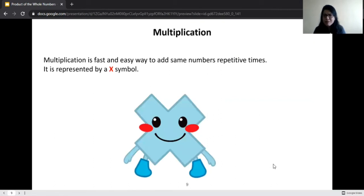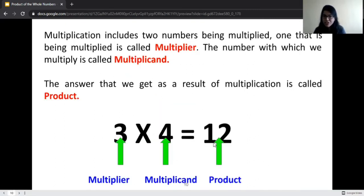Let us learn something more about multiplication. Multiplication is a very fast and easy way to add the same number again and again repetitive times. It is denoted by the symbol x. Multiplication basically includes two numbers that are being multiplied. Now the number which is being multiplied is called the multiplier, and the number with which we are going to multiply is called the multiplicand. And the answer of these two numbers, that is multiplication of multiplier and multiplicand, is called the product.